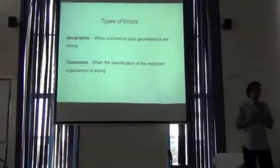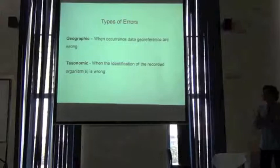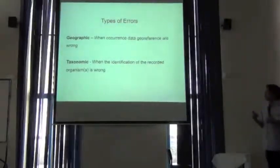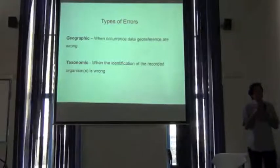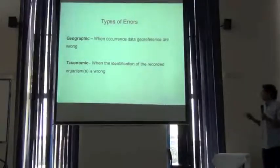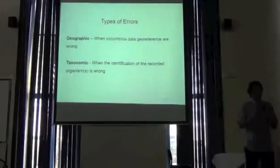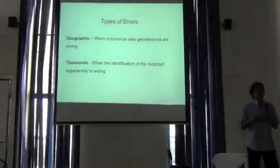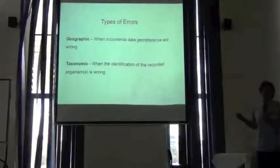There are two main types of errors we can find in occurrence data. One is of a spatial or geographic nature, referring to when the georeferencing of the occurrences has some problem. The other is taxonomic — when the identification of the species or the specimen collected is wrong. These two types of errors can compound the models when we are working with this type of data.